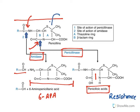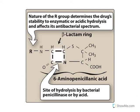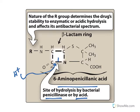Another important aspect is this ring called the thiazolidine ring, which is the site of hydrolysis by bacterial penicillinase or by gastric acids. Penicillin G and natural penicillin cannot be taken orally because gastric acid can break this ring. The beta-lactam ring is called the pharmacophore — the essential ring to show the mechanism of action. If the ring is opened, no activity is seen. The nature of the R group determines the drug's stability to enzymatic or acidic hydrolysis and affects its antibacterial spectrum.